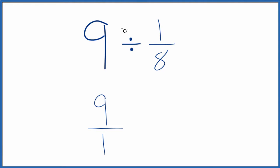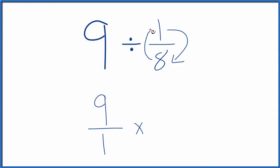Instead of division, we're going to multiply by the reciprocal of 1/8. To take the reciprocal of a number, we take 1 — the numerator — and move it to the bottom, and 8 — the denominator — goes to the top. So now we have 8 over 1. That's the reciprocal of 1/8.